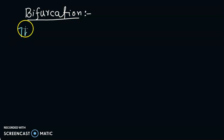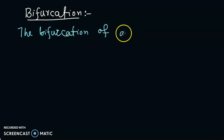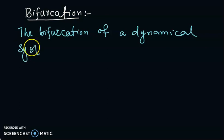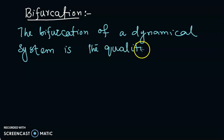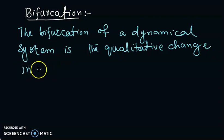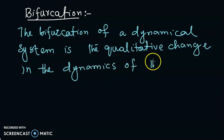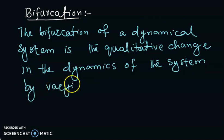The bifurcation of a dynamical system is the qualitative change in the dynamics of the system by varying parameters.